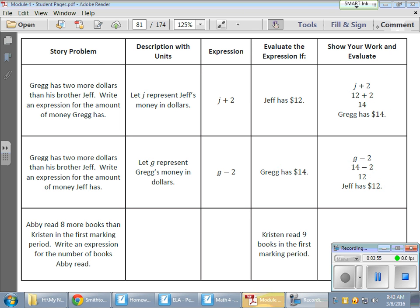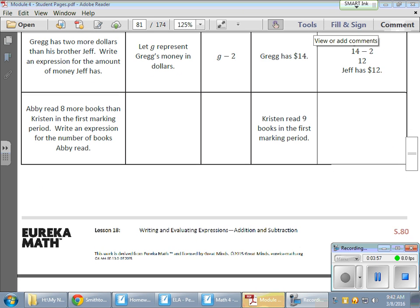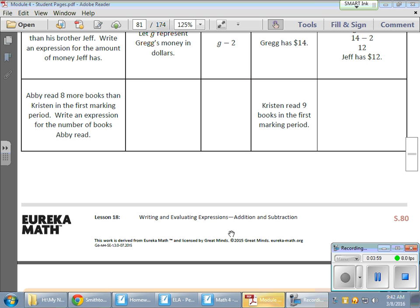Now, later on in the chart, what happens is they give us a little bit of information, but we need to fill some things in. We have Abby. She read eight more books than Kristen in the first marking period. Abby read eight more books. So this is an add situation here, plus eight. I write an expression for the number of books Abby read. Well, we need to assign some things here, a variable.